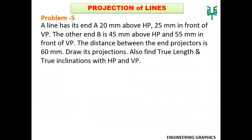A line has its end A, 20mm above HP and 25mm in front of VP. The other end B is 45mm above HP and 55mm in front of VP. The distance between the end projectors is 60mm. Draw its projections and also find the true length and true inclination with HP and VP.